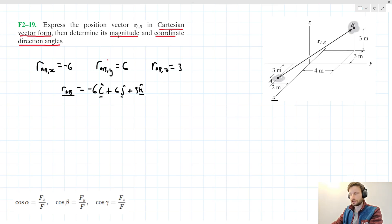Determine its magnitude. How might we do that? Well, we can just use Pythagorean theorem for something like that. The magnitude of r_AB equals the square root of 6² + 6² + 3².